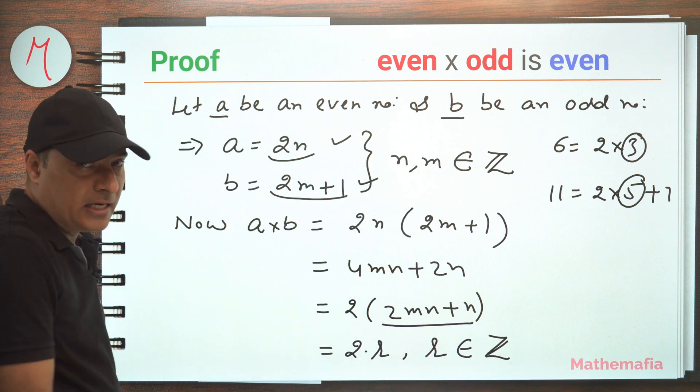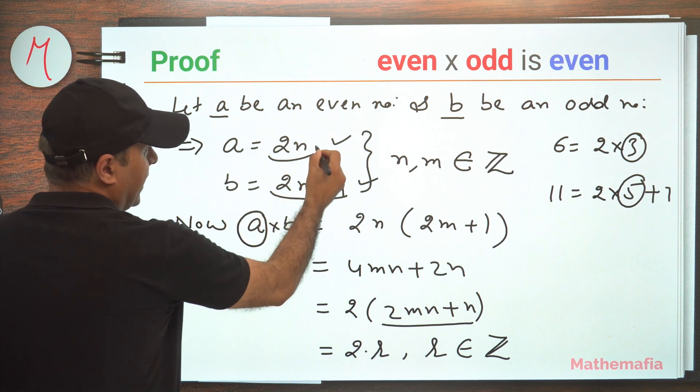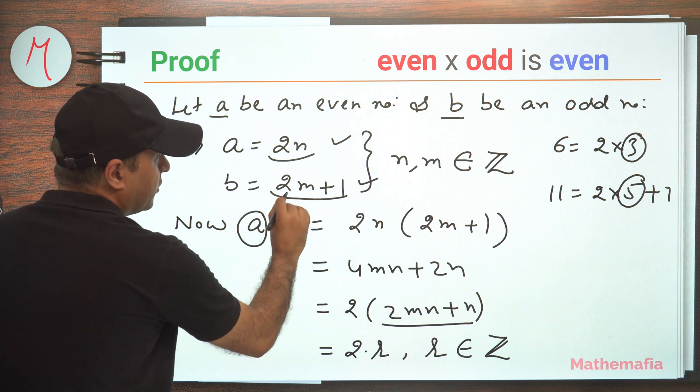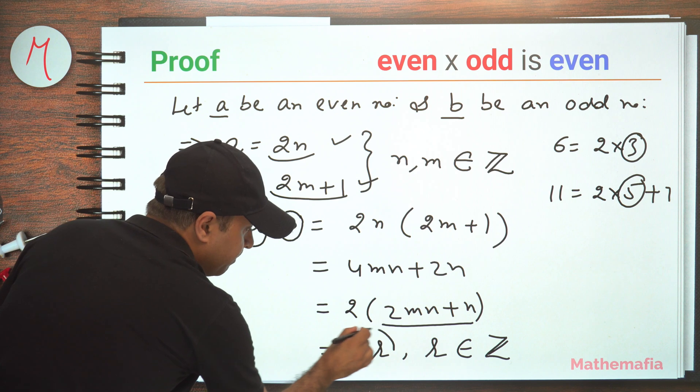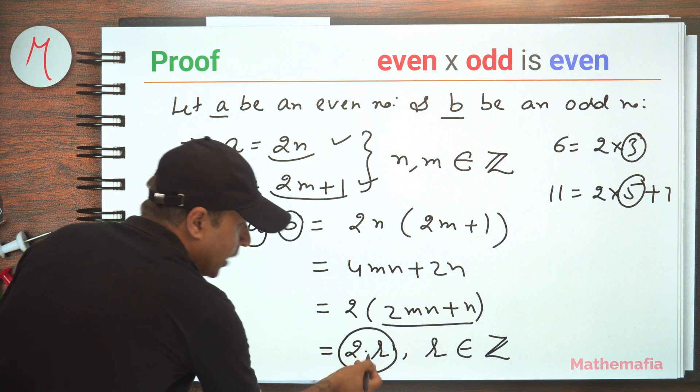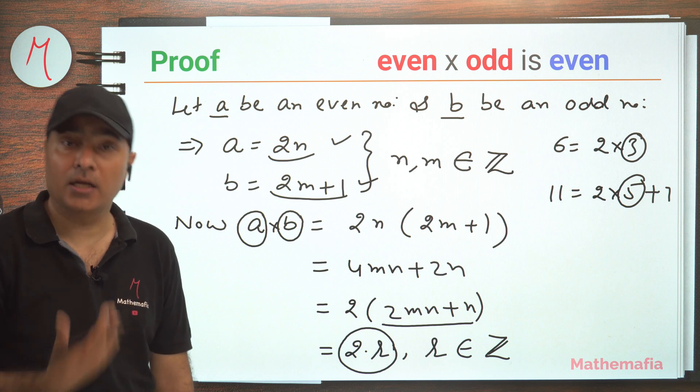So that's it. That's what we wanted to prove. A is an even number. B is an odd number, which is of the form 2m plus 1. But their product is of the form 2 into an integer. So 2 into an integer means this is an even number.